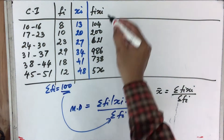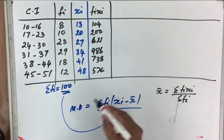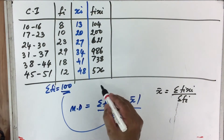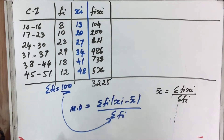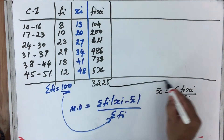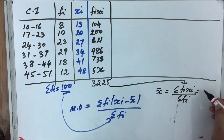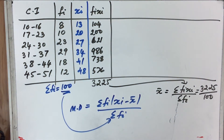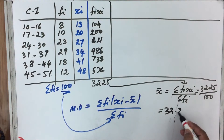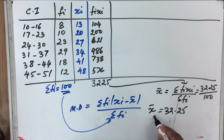The summation of all FI × XI values equals 3,225. Therefore, X-bar equals 3,225 divided by 100, which equals 32.25. So we have obtained X-bar as 32.25.